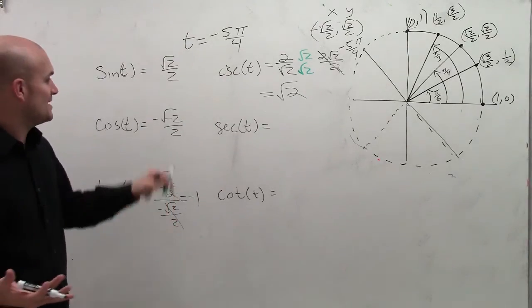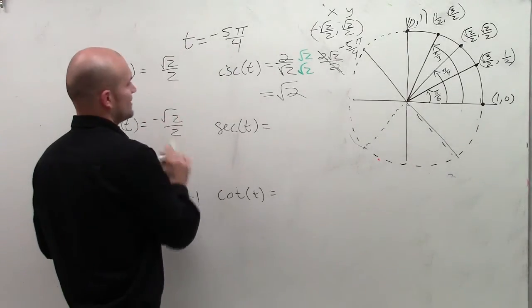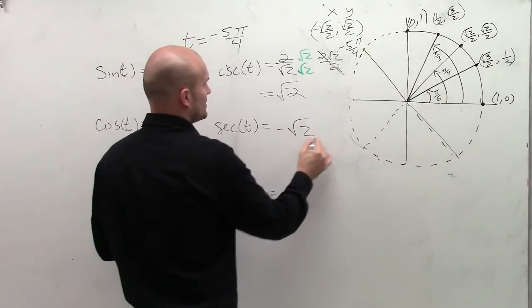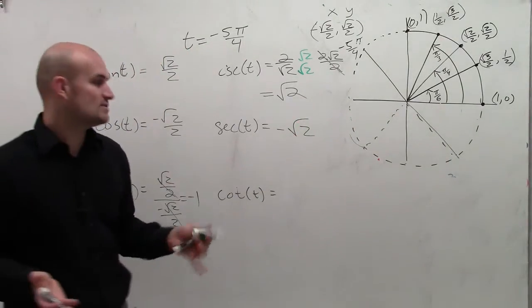Secant is going to be the exact same thing, except you're going to have a negative square root of 2. So you're going to follow the same operations as you would with cosecant, except now it's going to be negative.